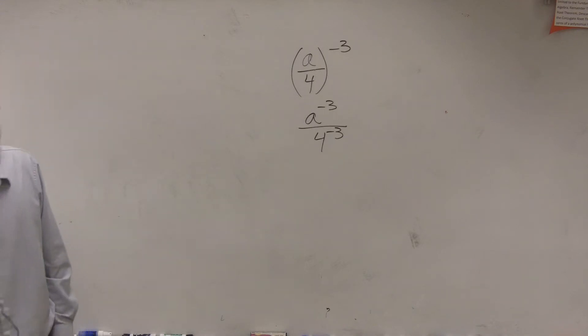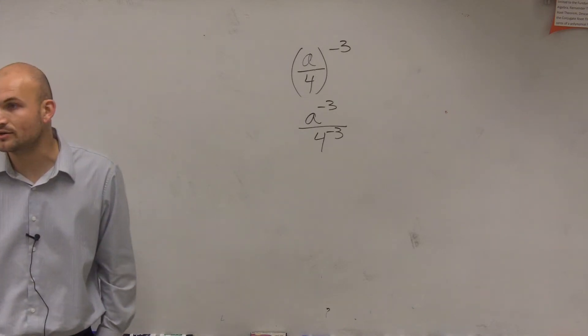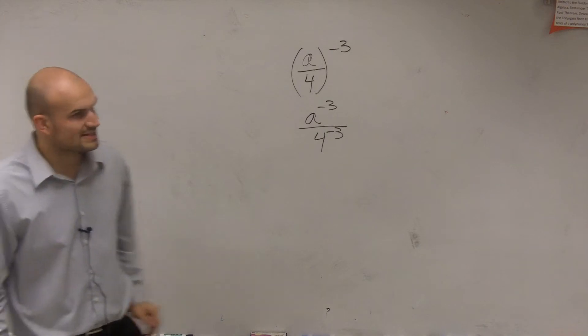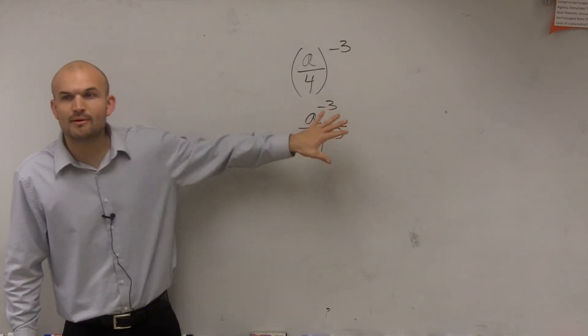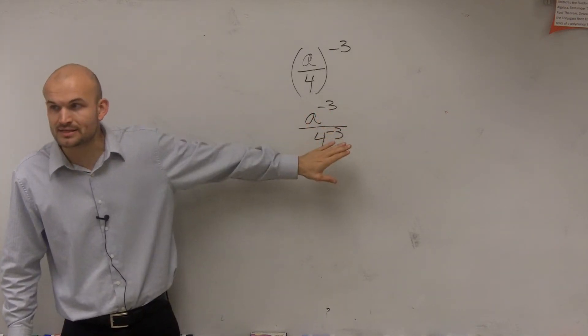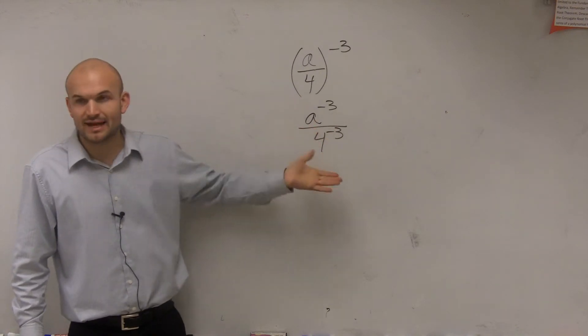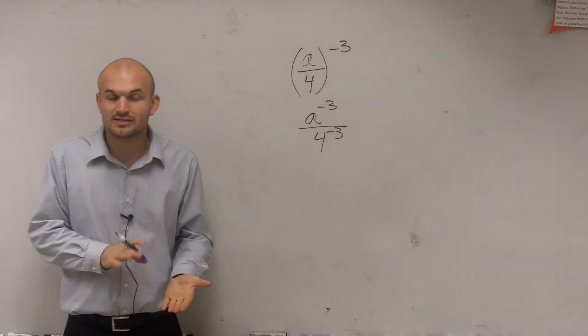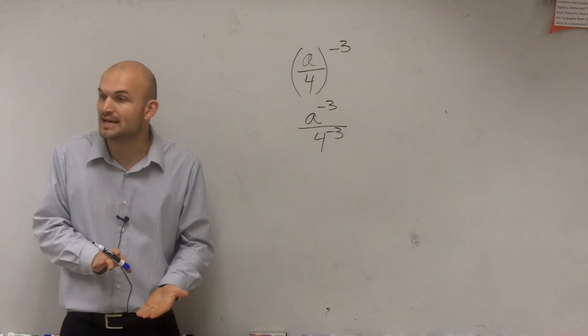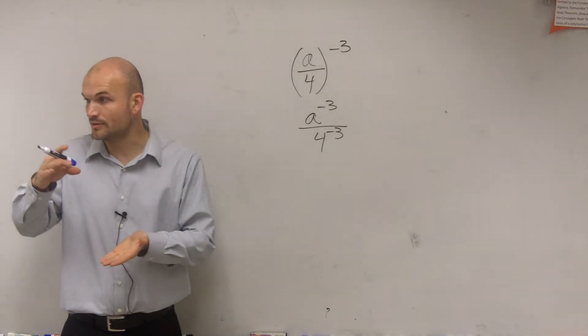Then you see what else you can do to simplify that. But before we even get to that point, we remember that the negative exponent rule states that whenever you have negative exponents, you've got to put them in the denominator to make them positive, or if they're negative in the denominator, you put them in the numerator.